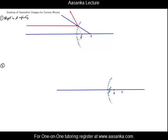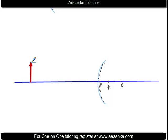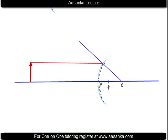The second case is when the object is anywhere between the pole and infinity. We take two rays from the tip of the object. The first ray is parallel to the principal axis — it gets reflected such that the incidence angle equals the reflected angle. The normal is drawn to the center of the circle. After reflection, this ray appears to be coming from the focus.